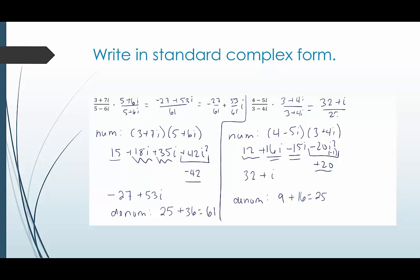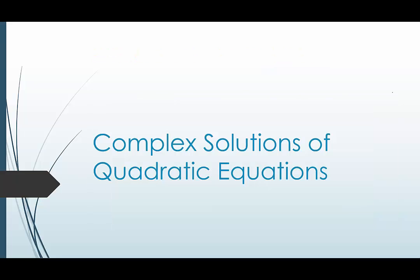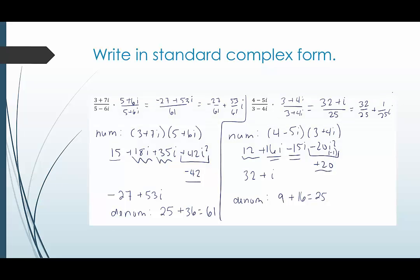If you need to separate them this would be 32 over 25 plus 1 over 25 times i. This has been a video on dividing complex numbers or writing numbers in complex form when they're fractions. Thank you for stopping by.